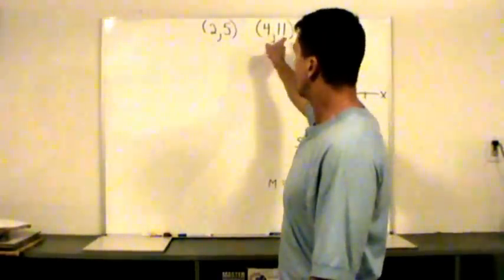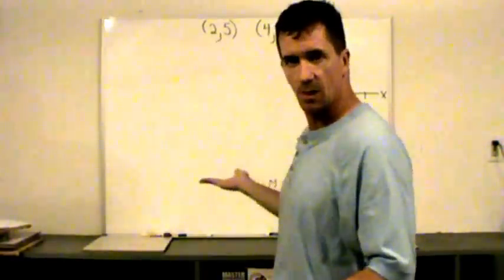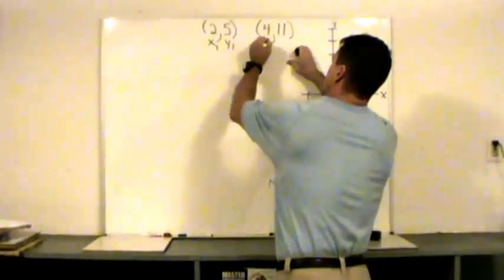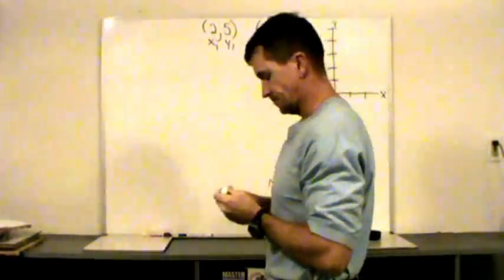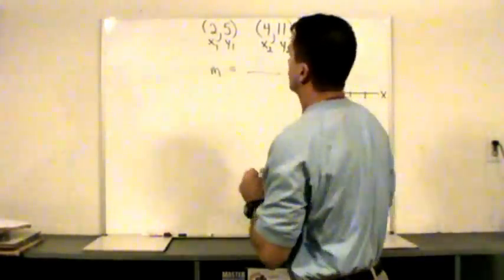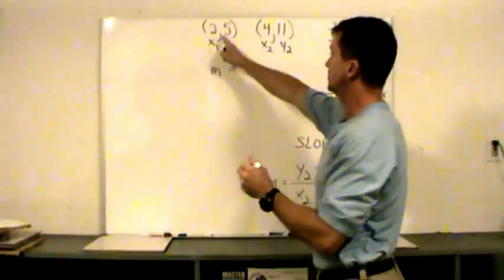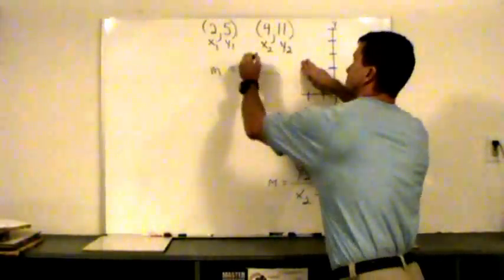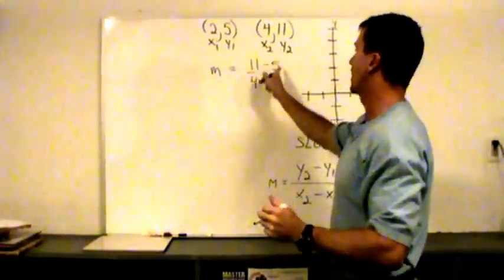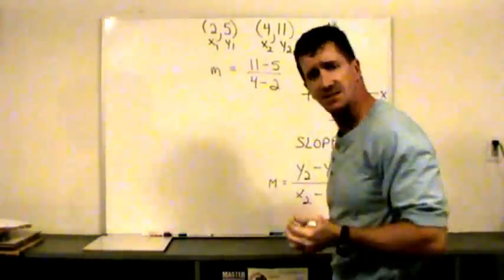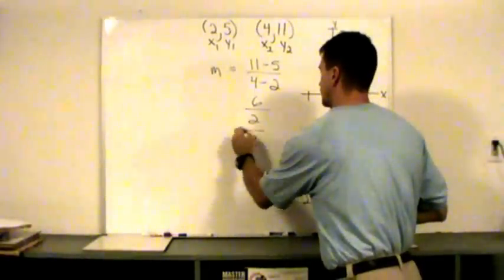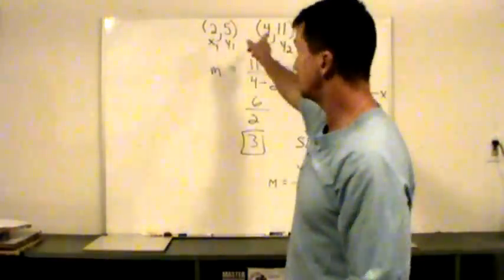I have two points here, 2 comma 5 and 4 comma 11. Let's call this one x sub 1 and y sub 1, and this will be x sub 2 and y sub 2. To find the slope of the line through these two points: m equals 11 minus 5 over 4 minus 2 — that's y sub 2 minus y sub 1 over x sub 2 minus x sub 1. We simplify to get 6 over 2, which is 3. So the slope of the line through these two points is 3.